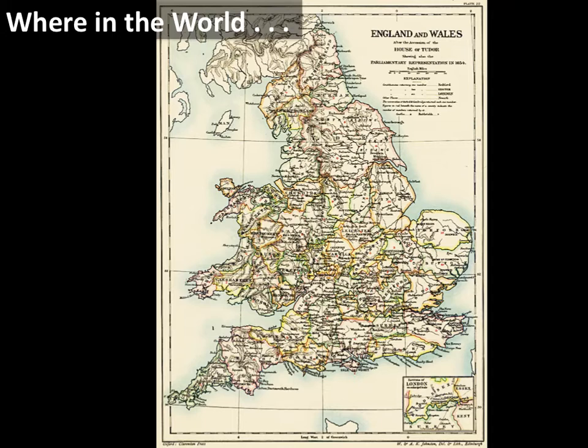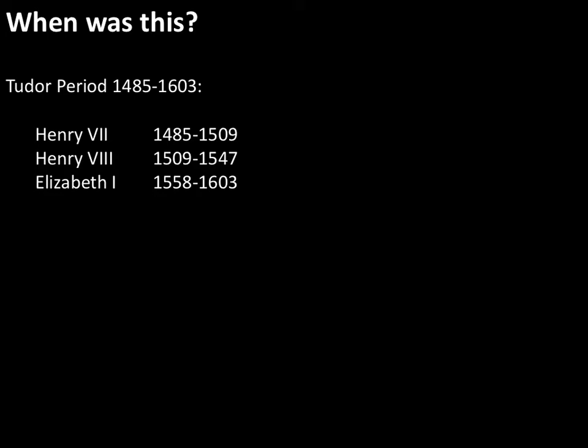When are we talking about? In broad terms we're really talking about what's called the Tudor period — from the late 1400s up to 1600, covering the reigns of Henry VII, Henry VIII, and then Elizabeth I who died in 1603. I'm using the word Elizabethan loosely here; we're really talking about the entire Tudor period.